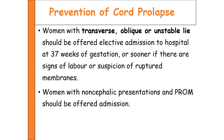Regarding prevention of cord prolapse: women with transverse, oblique, or unstable lie should be offered elective admission to hospital at 37 weeks of gestation, or sooner if there are signs of labor or suspicion of ruptured membranes. In these cases the umbilical cord is already lower-lying, and if labor begins or membranes rupture there is a chance of cord presentation progressing to cord prolapse.